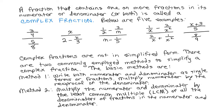The first example, we have three-fourths over five-eighths, so it has a fraction in the numerator and a fraction in the denominator. The second one, there's an x alone in the numerator but in the denominator there are two terms: two minus x over three, so there's a fraction there. And you can see from the third, fourth, and fifth examples, there are fractions in both the numerator and denominator.